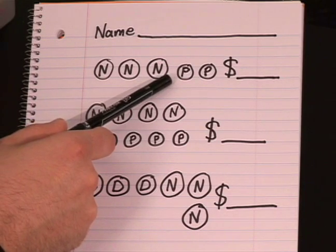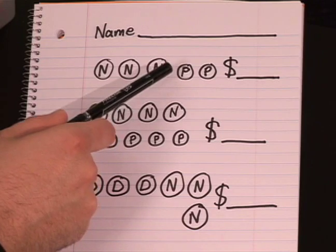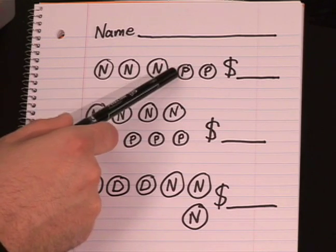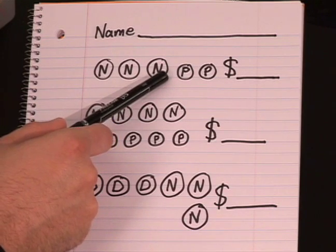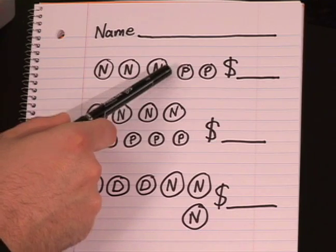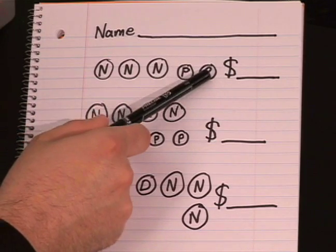Now switch to counting by what the next coin is. And pennies we count by what? Ones, right? So hold that 15. We're on 15 with the nickels. Now start counting by ones. 15, 16, 17.